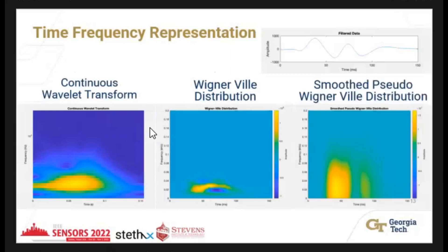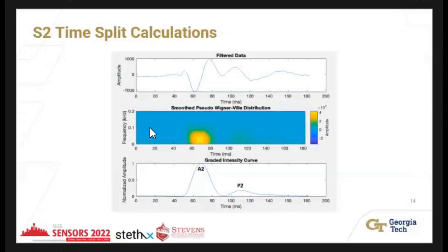We ultimately utilized the Smoothed Pseudo Wigner-Ville distribution, which shows two distinct peaks, making it easy to identify A2 and P2. The x-axis represents time, the y-axis represents frequency, and the color map represents intensity — the more yellow, the higher the amplitude. With this method, we can accurately determine where the A2 and P2 peaks occur.